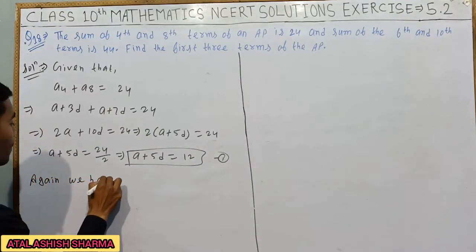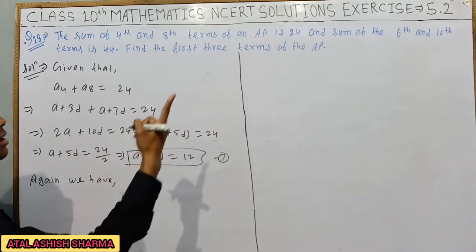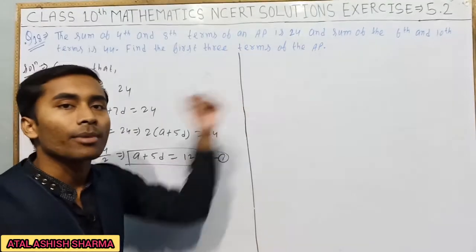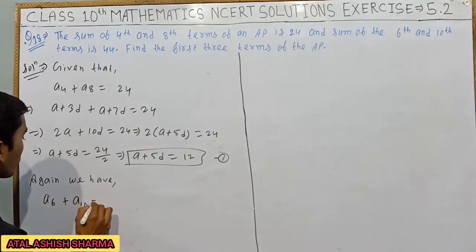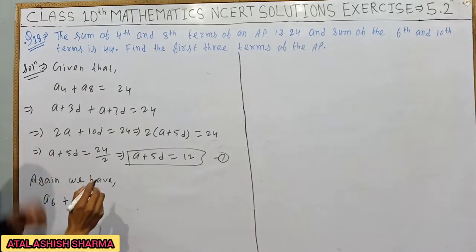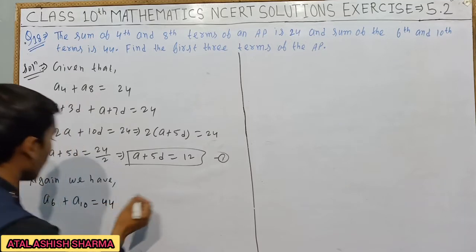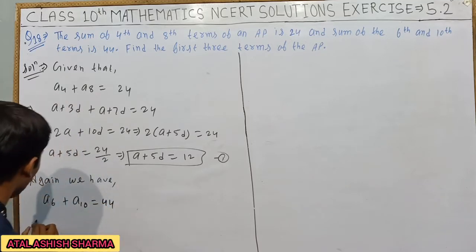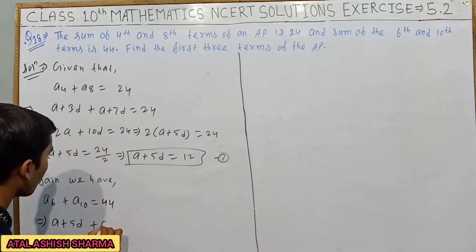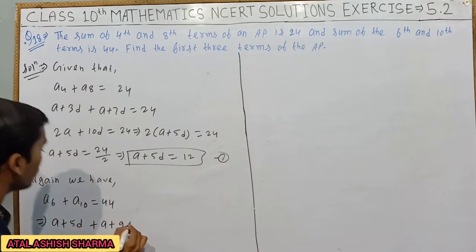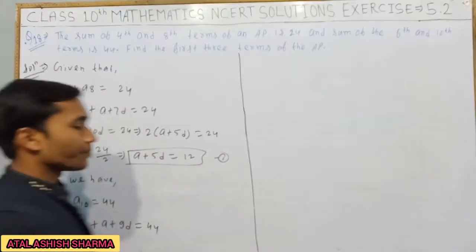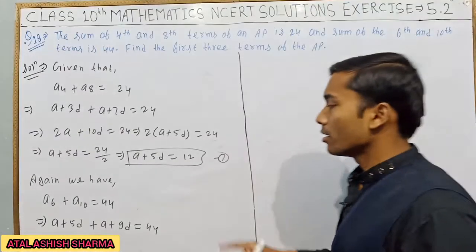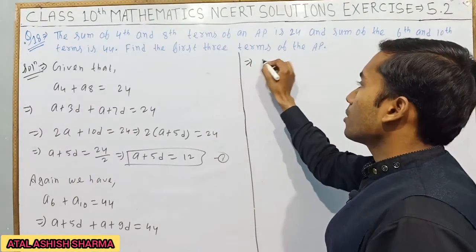Again we have 6th and 10th term sum given as 44. That is A6 plus A10 equals 44. Putting the values, A6 is a plus 5d and A10 is a plus 9d, equals 44.